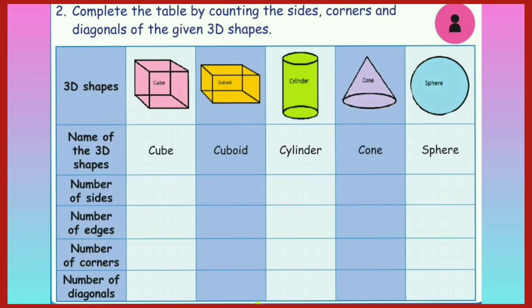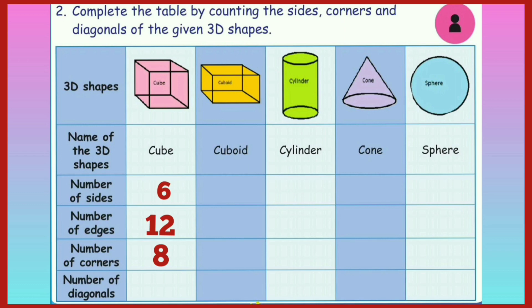Complete the table by counting the sides, corners and diagonals of the given 3D shapes. Children, we learnt the sides, corners and diagonals of a cube. A cube has 6 sides, which are 6 square faces, 12 edges, 8 corners, and 16 diagonals.